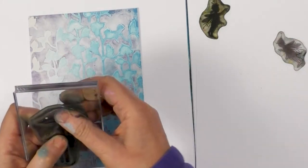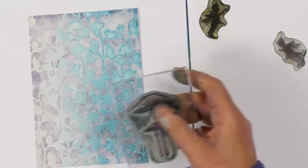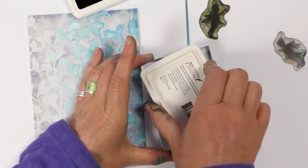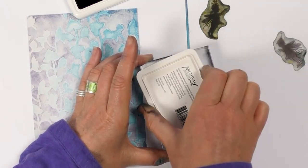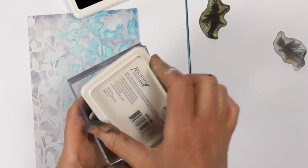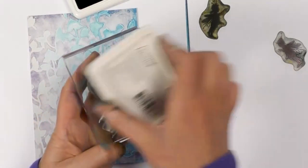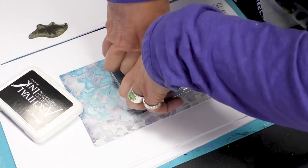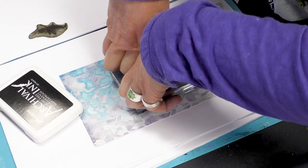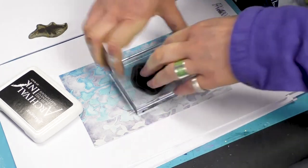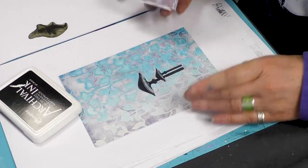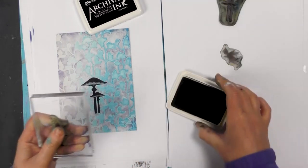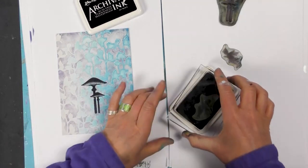So first of all, I'm going to ink up our mushroom, our wooden, I think it's the woodland mushroom, in archival. So just make sure that you have got that covered. And we're going to just bob that down about there. Give that a good press.